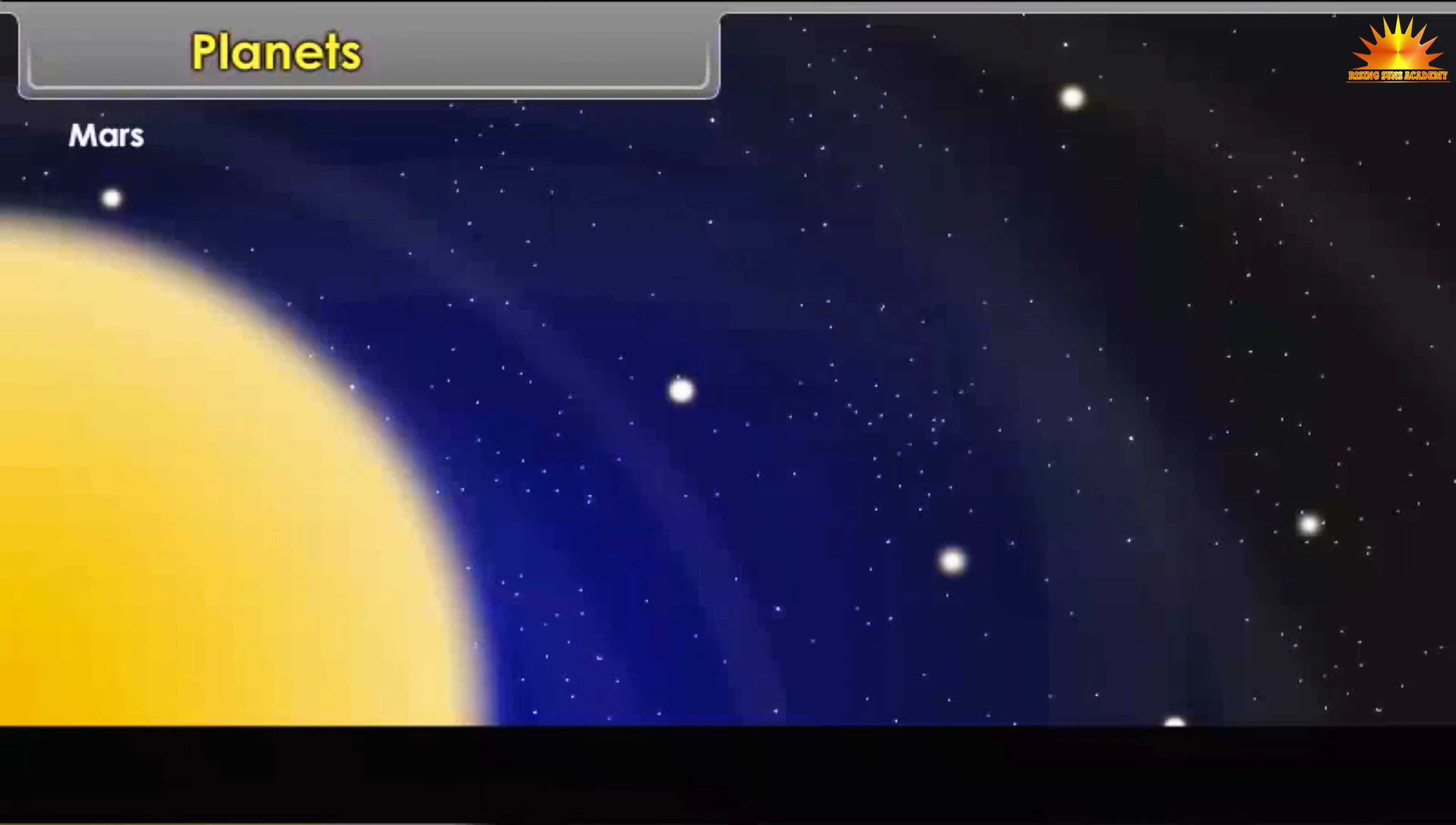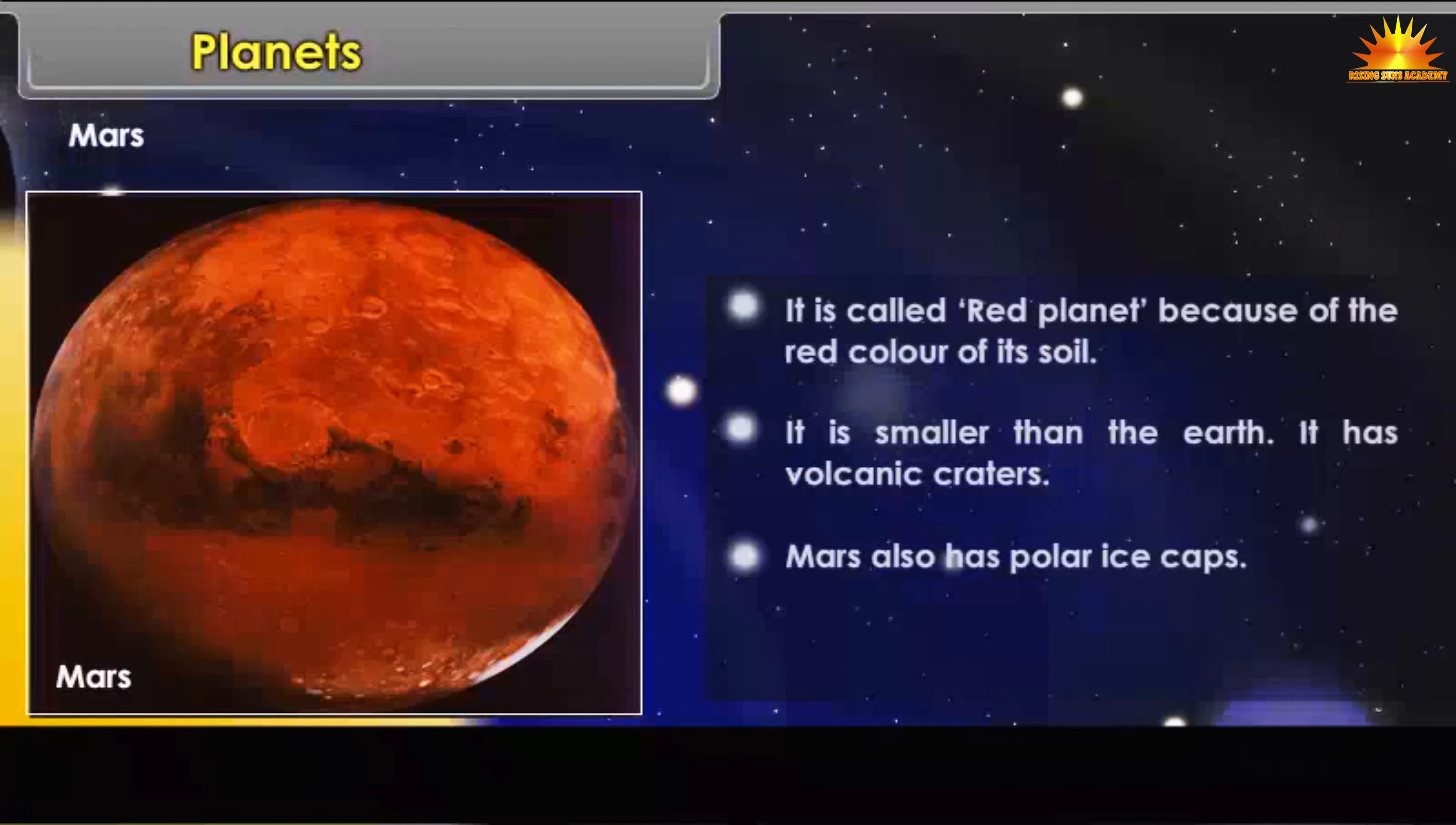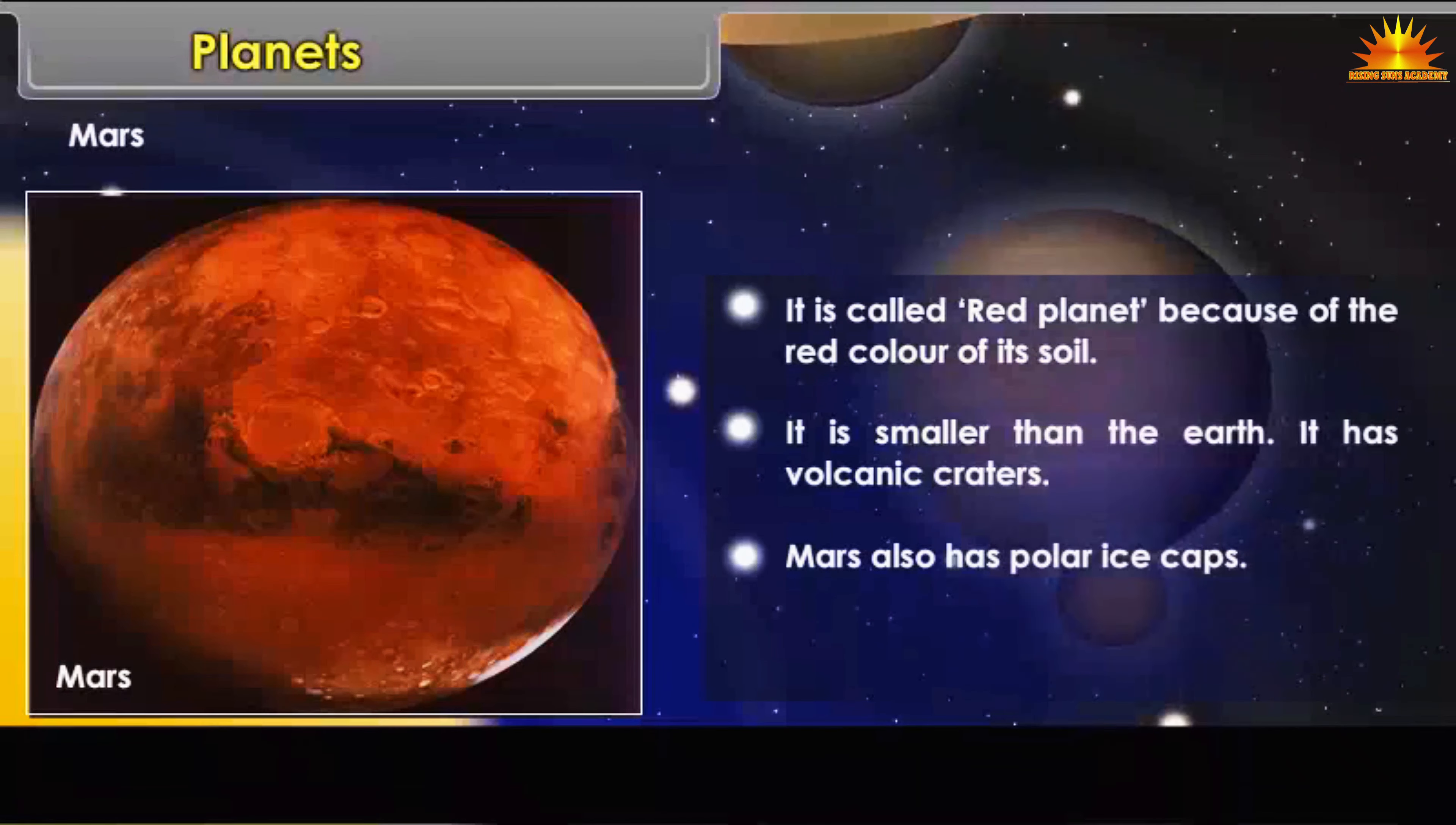Mars: We often hear about the planet Mars as red planet. Why do we call it a red planet? It is called red planet because of the red color of its soil. It is smaller than the Earth. It has volcanic craters. Mars also has polar ice caps.